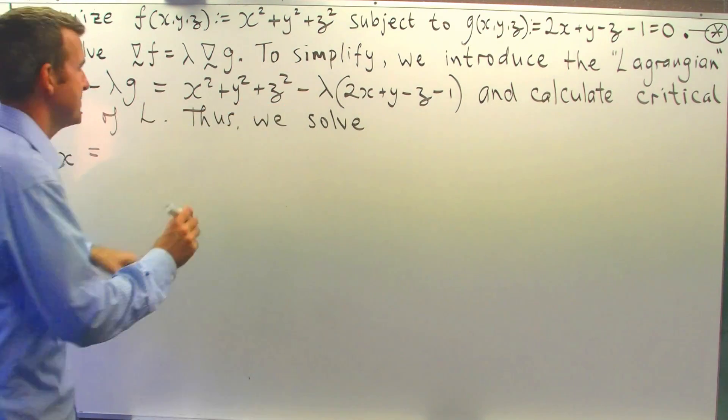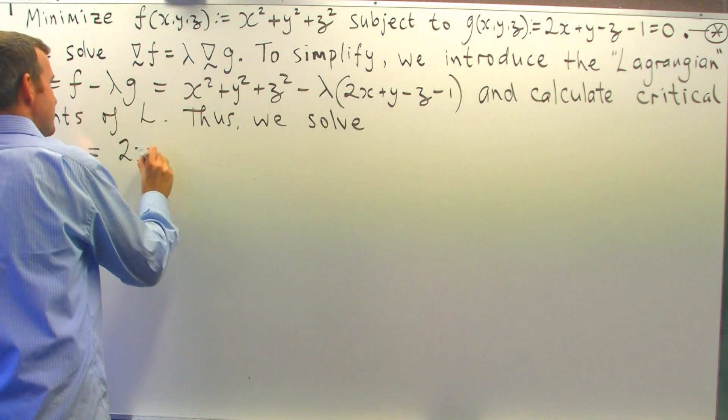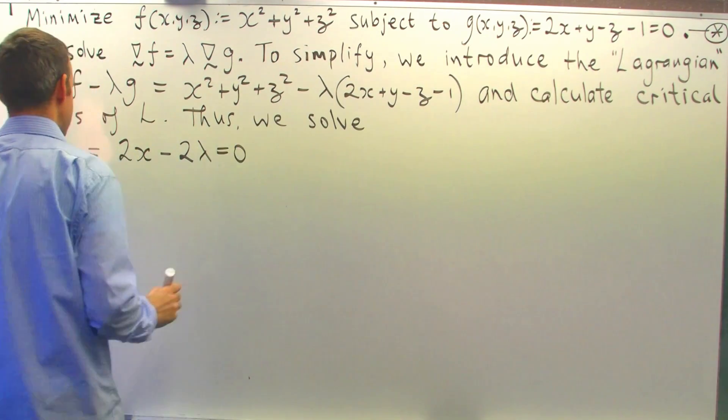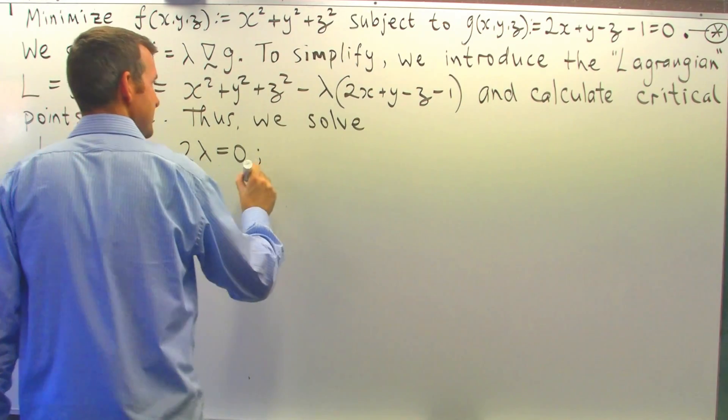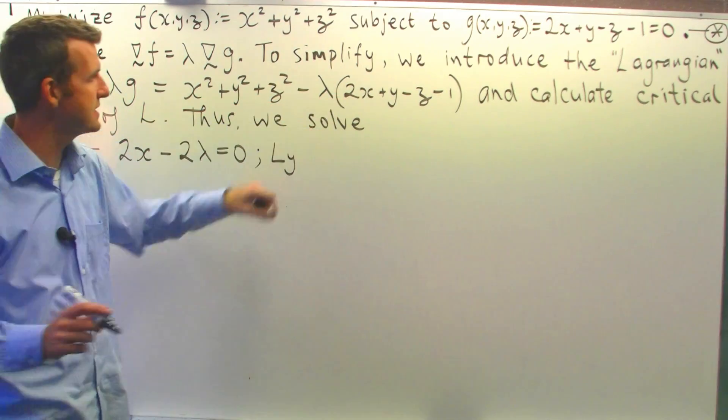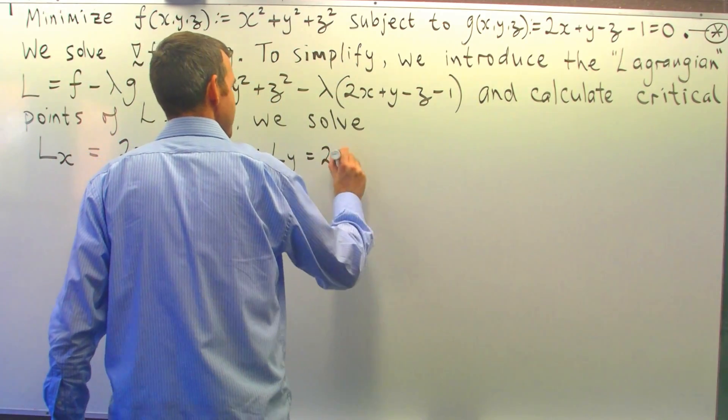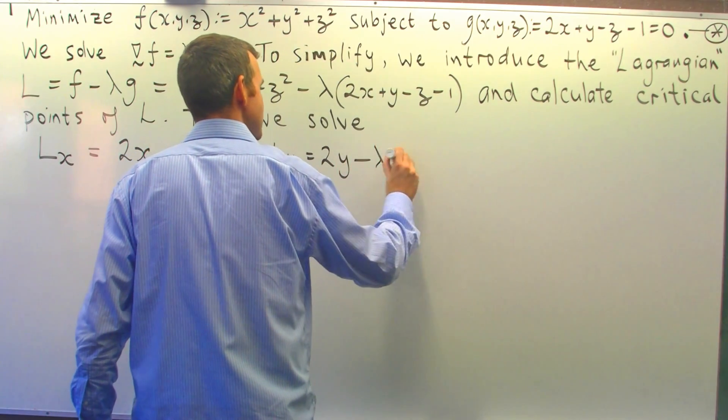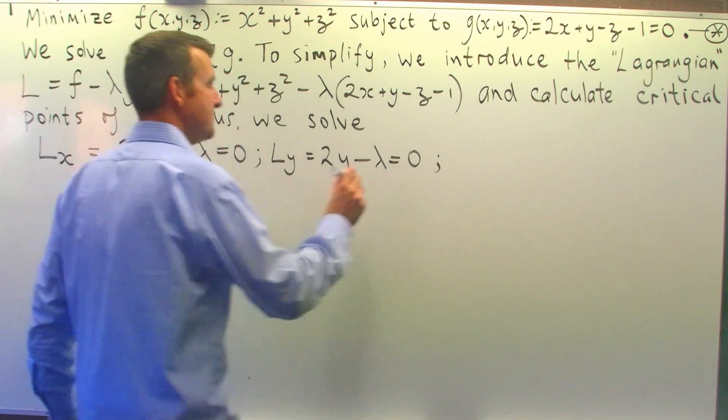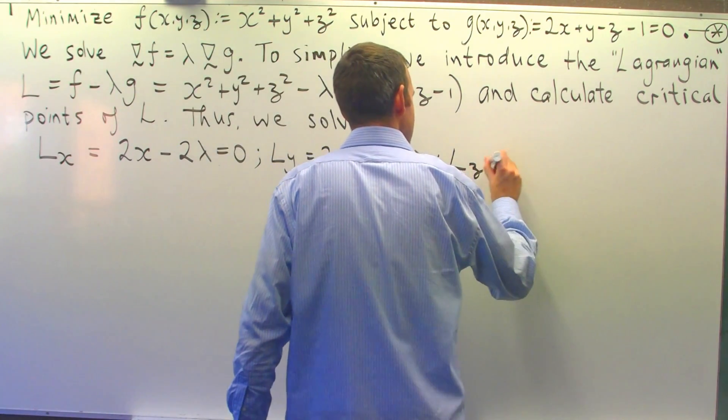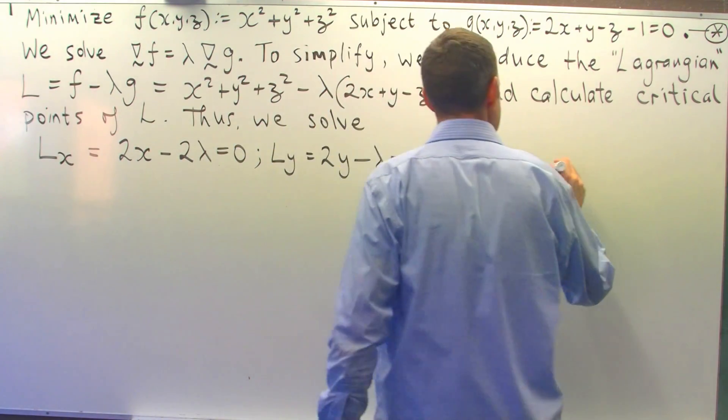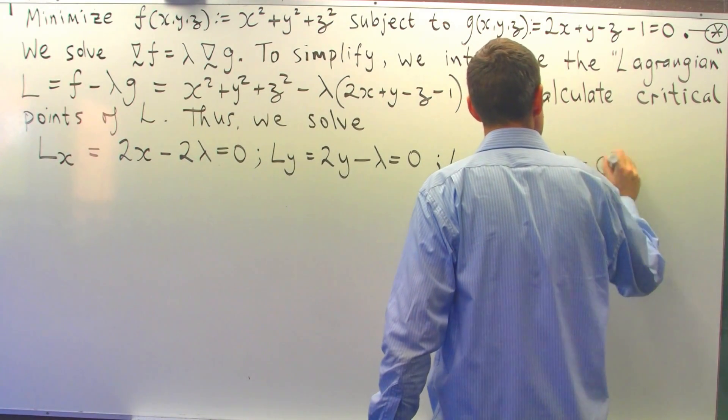So L sub x is going to be 2x minus 2 lambda, and we set that equal to 0. L sub y is going to be 2y minus lambda, and we set that equal to 0. And finally, dL/dz is going to be 2z plus lambda, and we set that equal to 0.